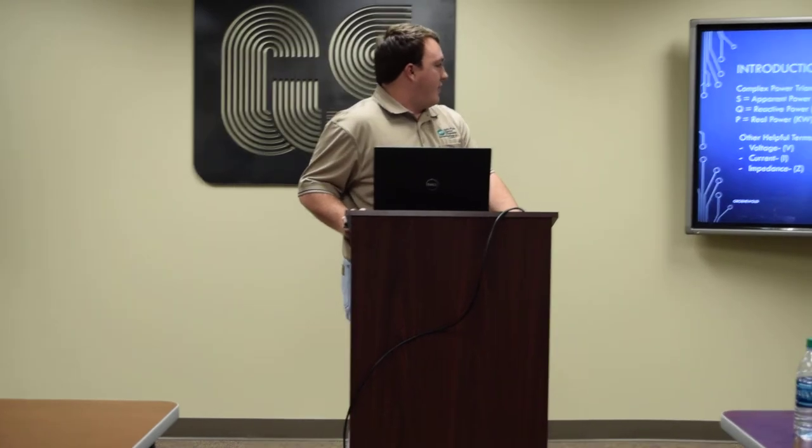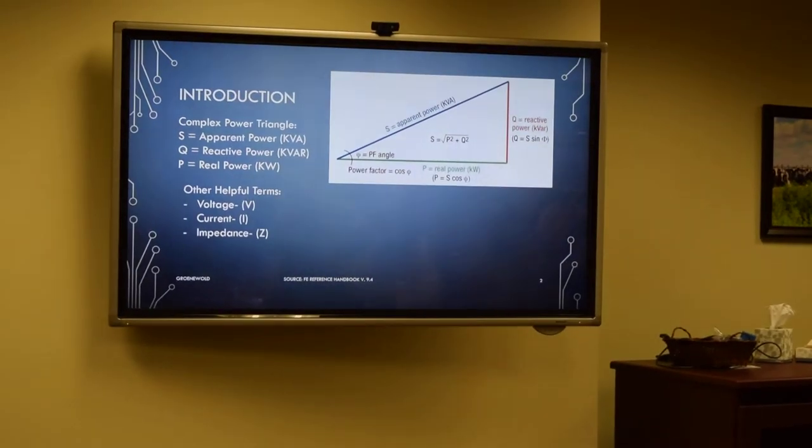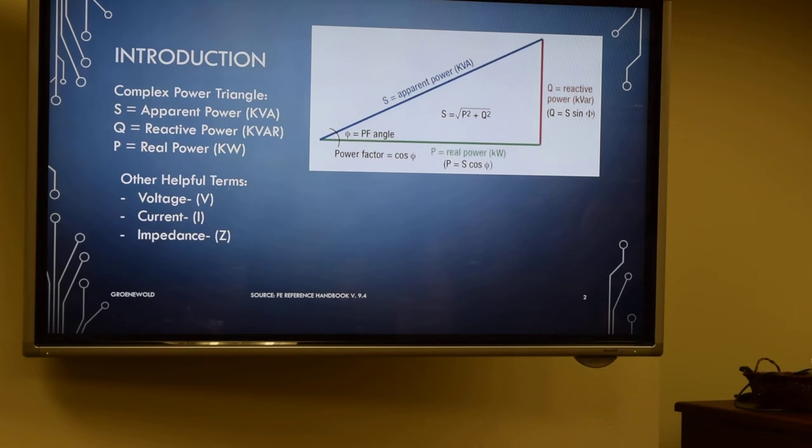Alright, so just to give you a brief introduction, I'm sure you've all seen this before. Just some things we'll cover in terms. Here is the complex power triangle where S is the KVA and it will represent Q as your KVAR, the imaginary part of complex power. And then you have your real power, which is your KW. And other terms that everyone's heard of: voltage, current, and impedance. We'll go more into that.